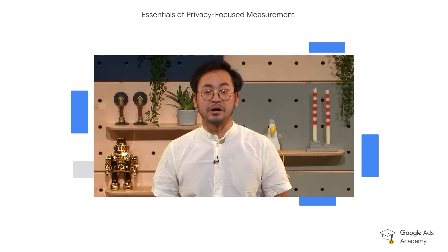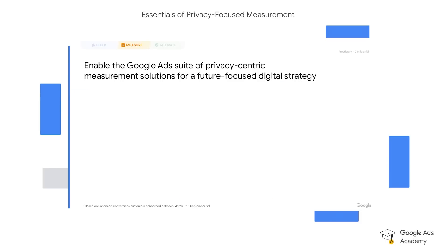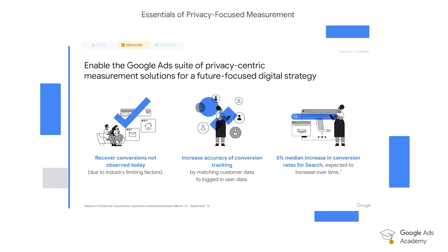We've seen how technology changes can affect your ability to observe data. That's where enhanced conversion comes in. Enhanced conversion for web will allow you to increase conversion observability, whether you're optimizing towards lead forms or even online sales, by increasing the amount of available first-party data. Through that, you'll also be able to have better conversion modeling. And finally, enhanced conversion for web will also allow you to improve your campaign's performance.